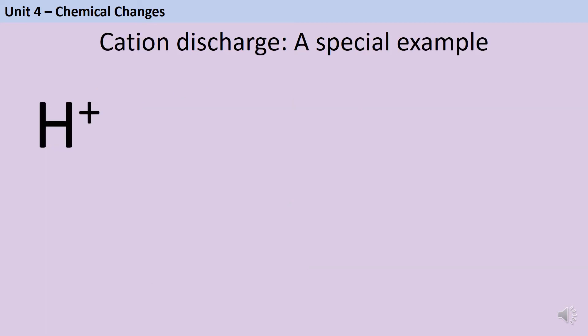For electrolysis, it's almost always easier to write discharge half equations for cations than anions. But there is one example that is a little bit trickier.